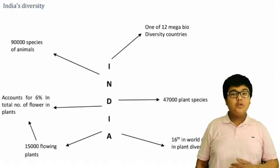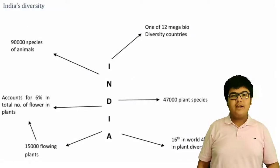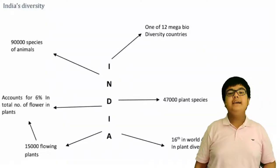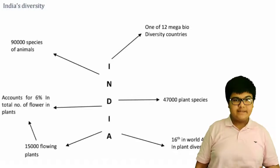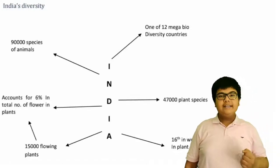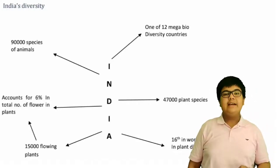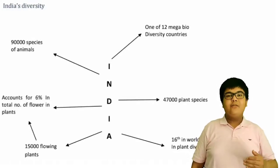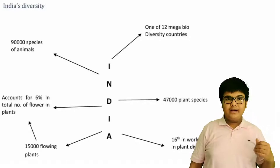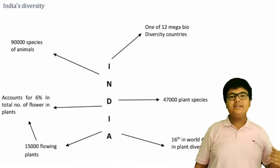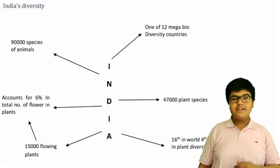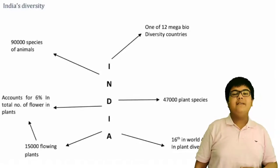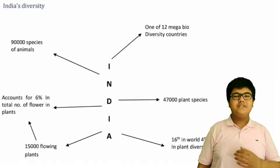India has a huge diversity of flora and fauna. India has 47,000 plant species, 90,000 animal species, and 15,000 flowering plants, which account for 6% of the total flowering plants in the world. This makes India 10th in the world and 4th in Asia in plant diversity, and one of the 12 mega biodiversity countries of the world.